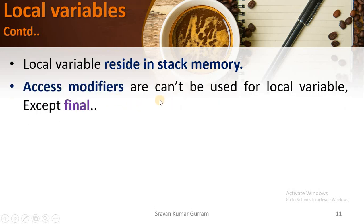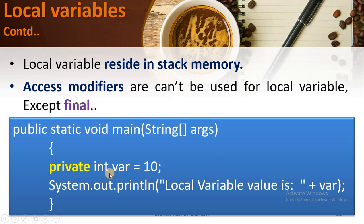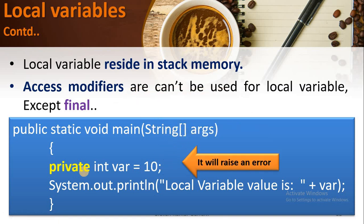Access modifiers cannot be used for local variables, except for final. What access modifiers are and their different types will be covered in coming videos. But for now, just remember: local variables cannot be used with access modifiers. If you write a local variable with the access modifier private, you will get an error because local variables cannot be used with any access modifiers.